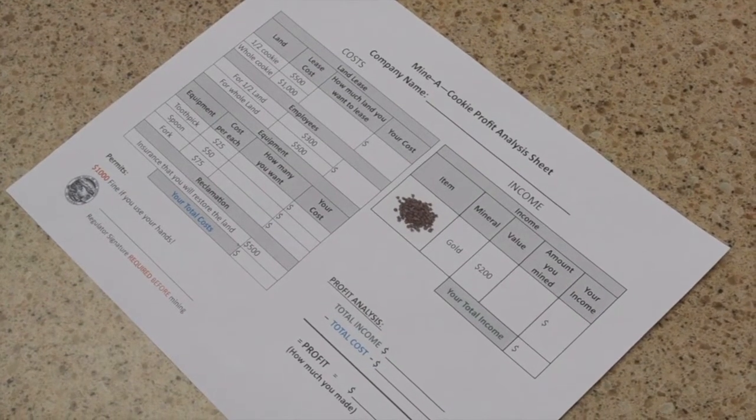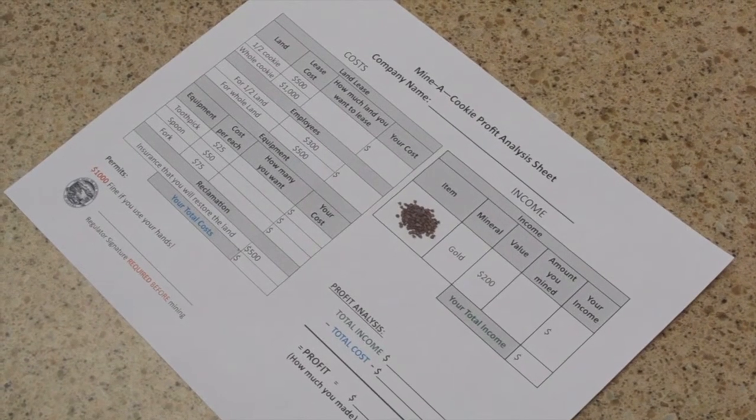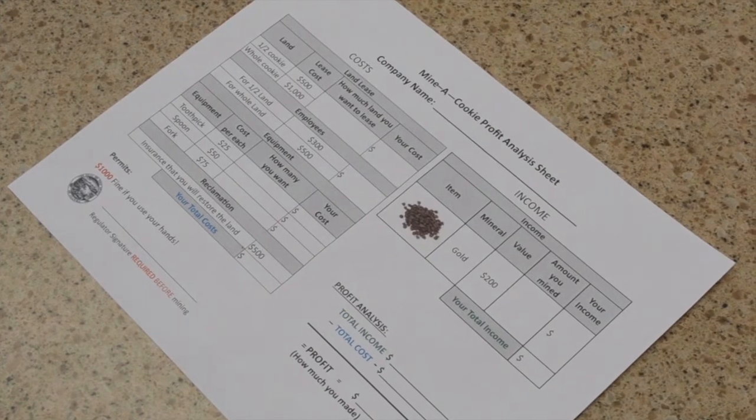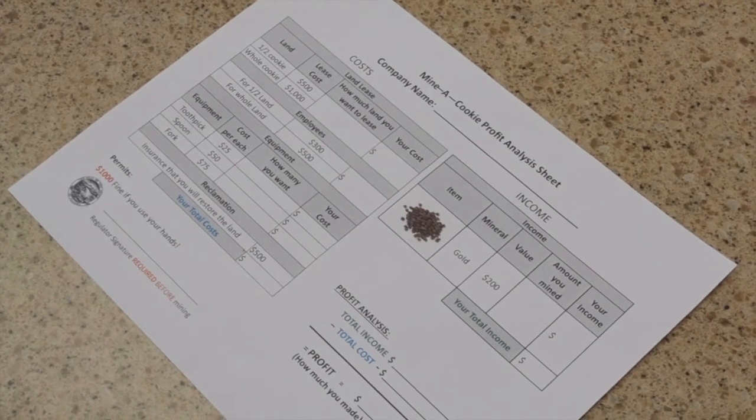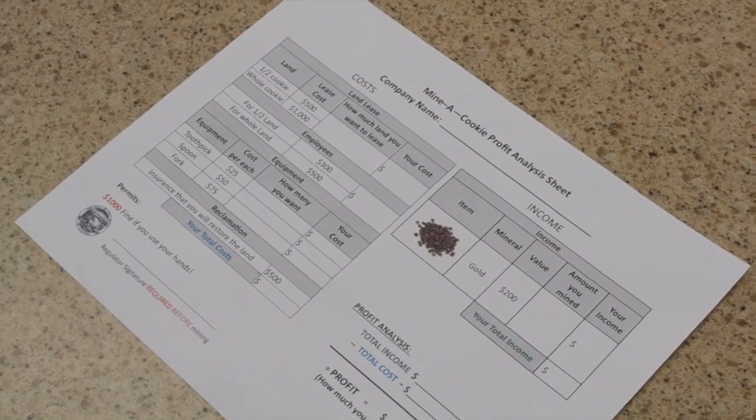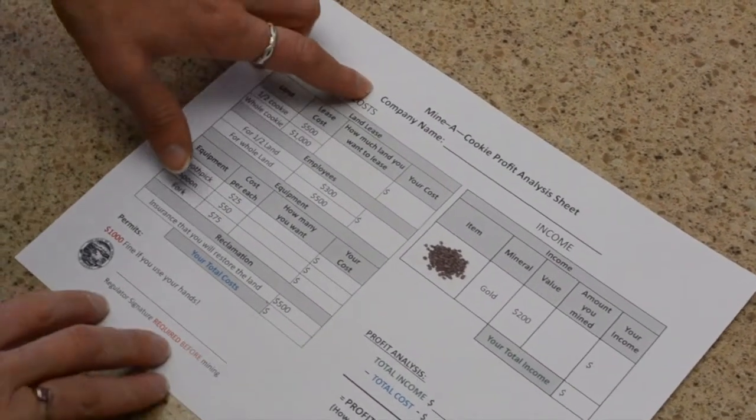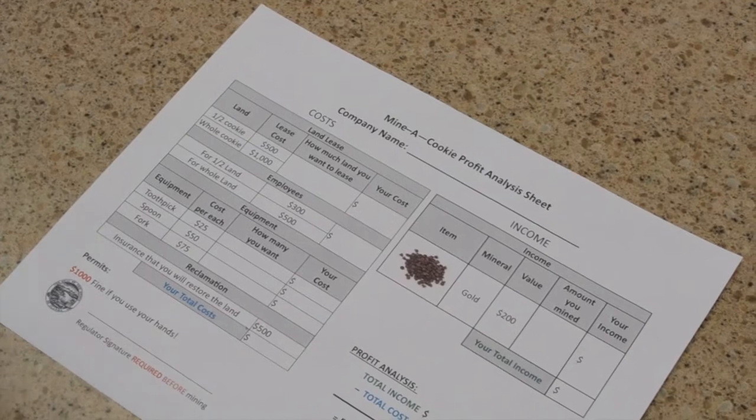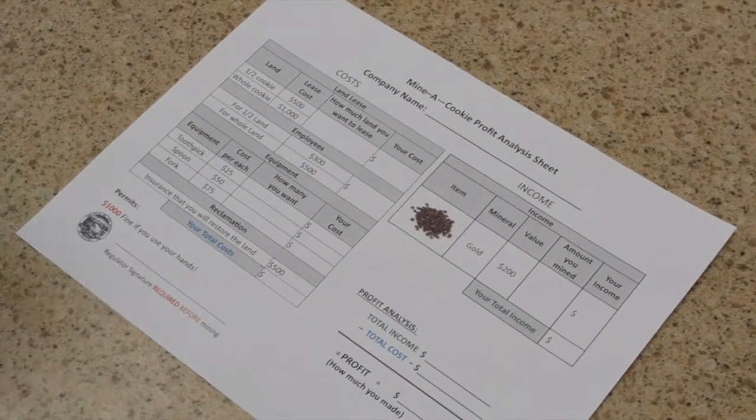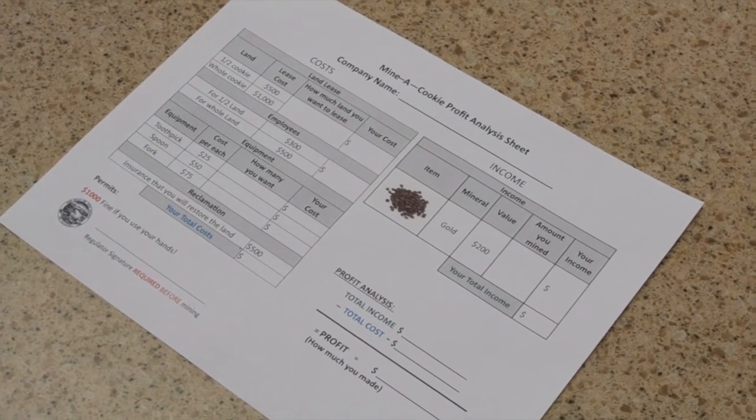Once we have covered where minerals come from and mining, we get them together in their groups to talk about what they would need if they were going to start their own brand new mining company. So the main things that they're going to need to start their company, obviously first a company name, then they're going to need a lot of money. So we can talk about where they can get money from, investors, borrowing from the bank, that sort of thing.